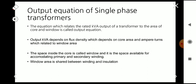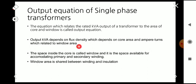The equation which relates the rated KVA output of a transformer to the area of core and window is called the output equation. Normally the output is expressed in KVA, and the equation relates the area of core and area of window with that KVA. For relating that, we are expressing the KVA output in terms of the flux density B and ampere-turns AT. This flux density then depends upon the core area, and ampere-turns are related to the window area.